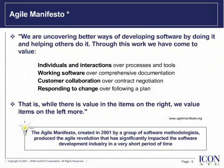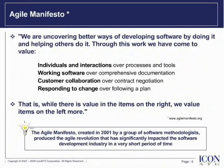The Agile Manifesto is a statement of principles which are the underpinning of Agile software development. It was drafted in February 2001, where representatives of various new methodologies such as Extreme Programming, Scrum, DSDM, Crystal, and feature-driven development met to discuss the need for lighter alternatives to the traditional heavyweight methodologies.